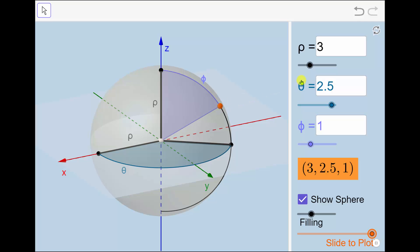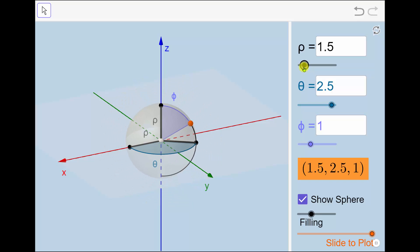So once again, rho is the distance between the point and the origin. So if we change rho, we can see the point changes its position.